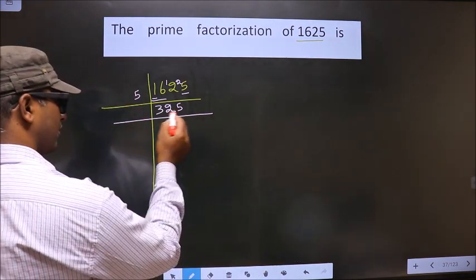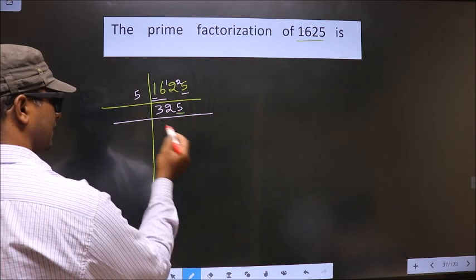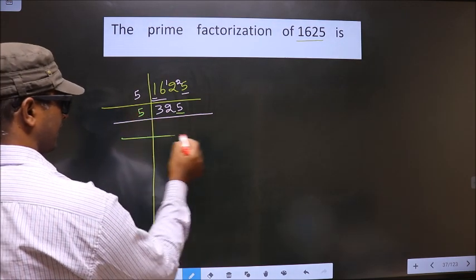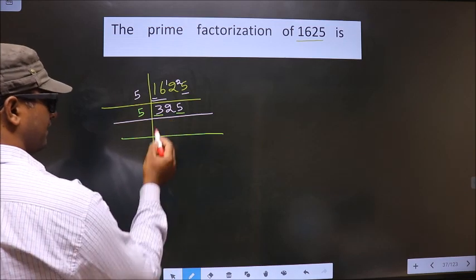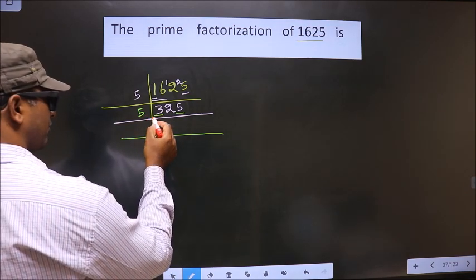Now, for this number you have 5 here, so you take 5 again. First number is 3. 3 is smaller than 5, so you take two numbers, that is 32.